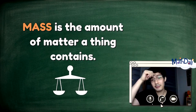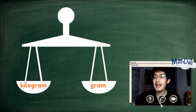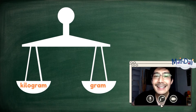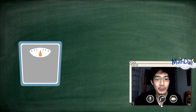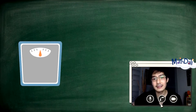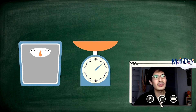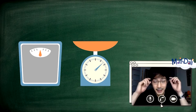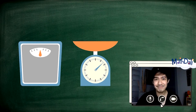We can measure mass in terms of grams and kilograms. Gumagamit tayo ng bathroom scale, weighing scale, o timbangan para makuha ang mass ng isang object. Ano ba itong gram at kilogram na ito? Para mas maitindihan natin, mga classmates, panoorin natin ito.